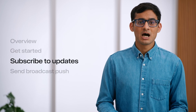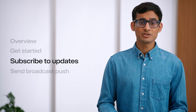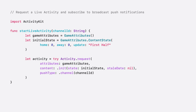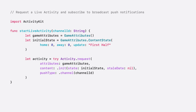In my app, I'll request the channel ID for the game from my remote server before starting a live activity. I'll create a function that starts a live activity, beginning by passing in the ID of the channel received from my remote server for the game. I'll create the attributes for the activity as well as the initial values. Finally, when requesting the activity, I'll pass the parameter channel as the push type, including the channel ID. This indicates to ActivityKit to subscribe for push updates for this activity on the channel identified by this ID.